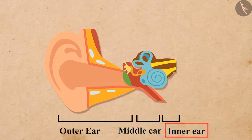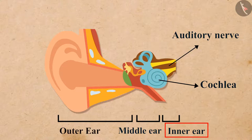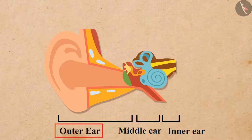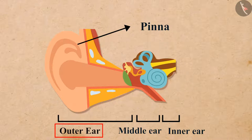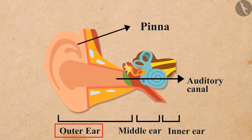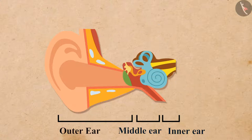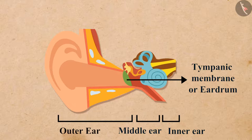The inner ear includes the cochlea and the auditory nerve. The pinna of the outer ear collects the sound from the surroundings, and then it passes through the auditory canal. Then the sound reaches the eardrum or the tympanic membrane.